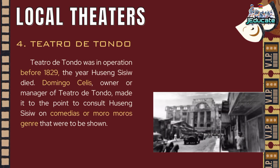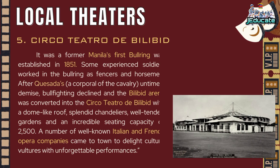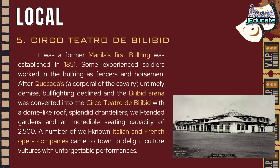Number 4: Teatro de Tondo. Teatro de Tondo was in operation before 1829, the year Huseng Sisiv died. Domingo Cellis, owner or manager of Teatro de Tondo, made it a point to consult Huseng Sisiv on comedias, or Moro-Moro's genre, that were to be shown. Number 5: Circo Teatro de Bilibid. It was formerly Manila's first bullring, established in 1851. After Quesada's untimely demise, bullfighting declined and the Bilibid arena was converted into the Circo Teatro de Bilibid, with a dome-like roof, splendid chandeliers, well-tended gardens, and a seating capacity of 2,500. A number of well-known Italian and French opera companies came to town to delight audiences with unforgettable performances.